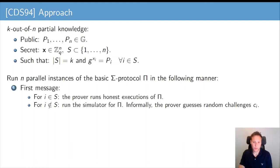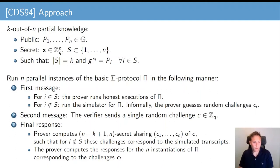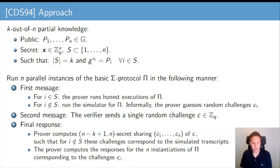In more detail: in the first step, the prover computes k first messages honestly and simulates n minus k transcripts. For the second message, the verifier samples a single challenge for all n problem instances and sends it to the prover. In the third step, the prover computes an (n-k+1, n) secret sharing c1 up to cn of c such that the n minus k simulated challenges correspond to the secret shares. The parameters are such that the prover can control at most n minus k entries of the secret sharing; for the other k instances the prover must compute the final response honestly. The prover sends the secret sharing and all final responses to the verifier, who verifies all n transcripts and the secret sharing.